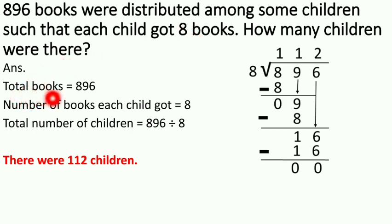See, total books is equal to 896. Number of books each child got is 8. And total number of children is equal to 896 divided by 8. So you have to do division.